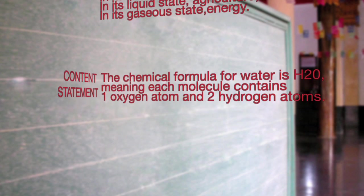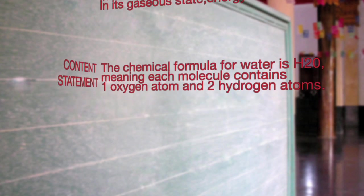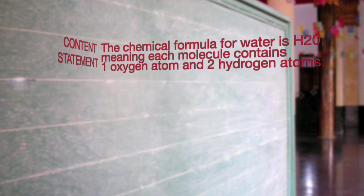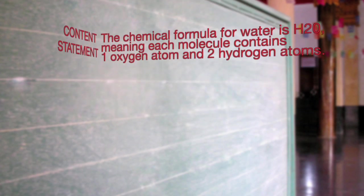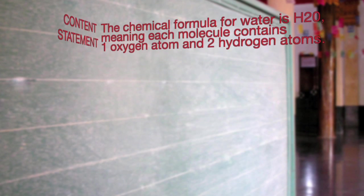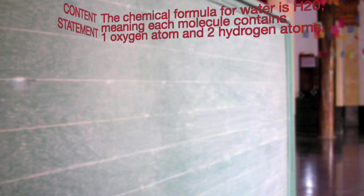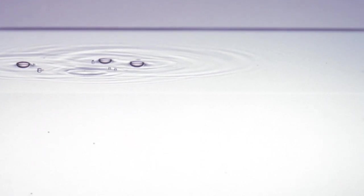The chemical formula for water is H2O, meaning each molecule contains one oxygen atom and two hydrogen atoms. Thank you very much! Think about all the things you need water for. Would you be able to live without it? We'll be right back.